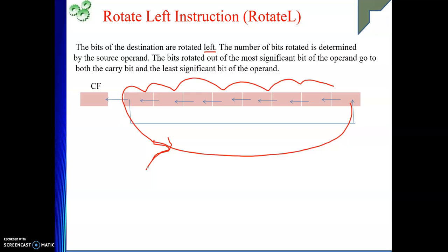In the case of a shift instruction, the vacated position was filled up by zero, and the going-out bit would go to carry and eventually drop. But in the case of a rotate instruction, your information stays within the operand — whosoever is going out will take the position of the vacated position. Also, the going-out bit will also occupy the carry flag.